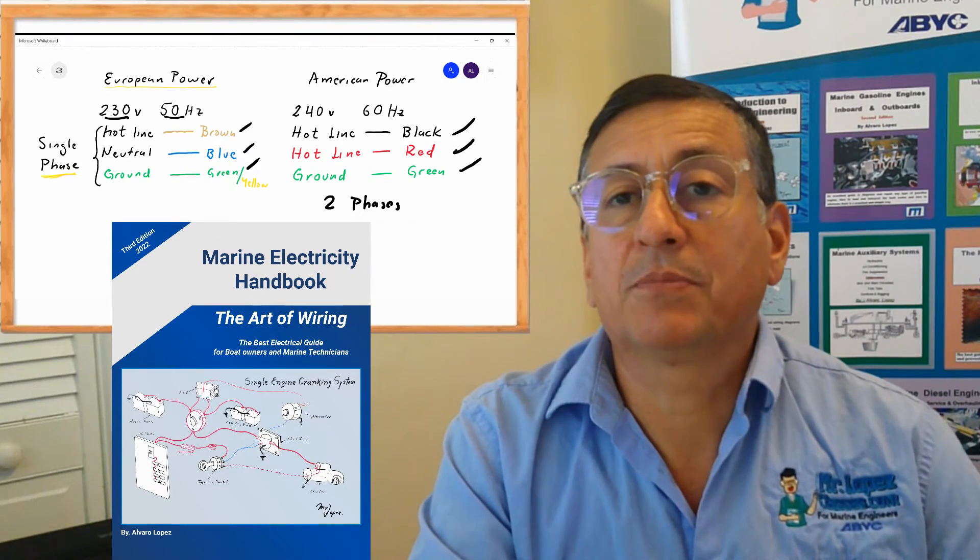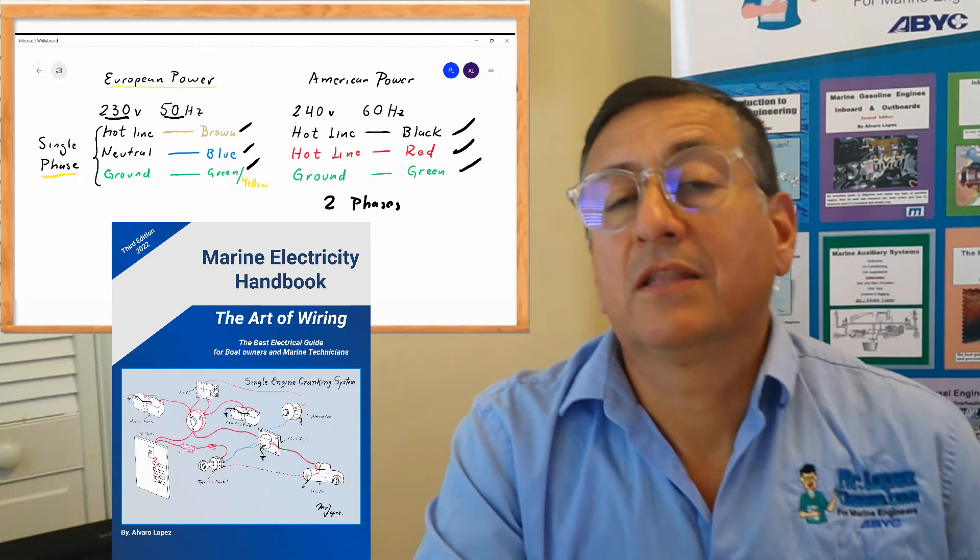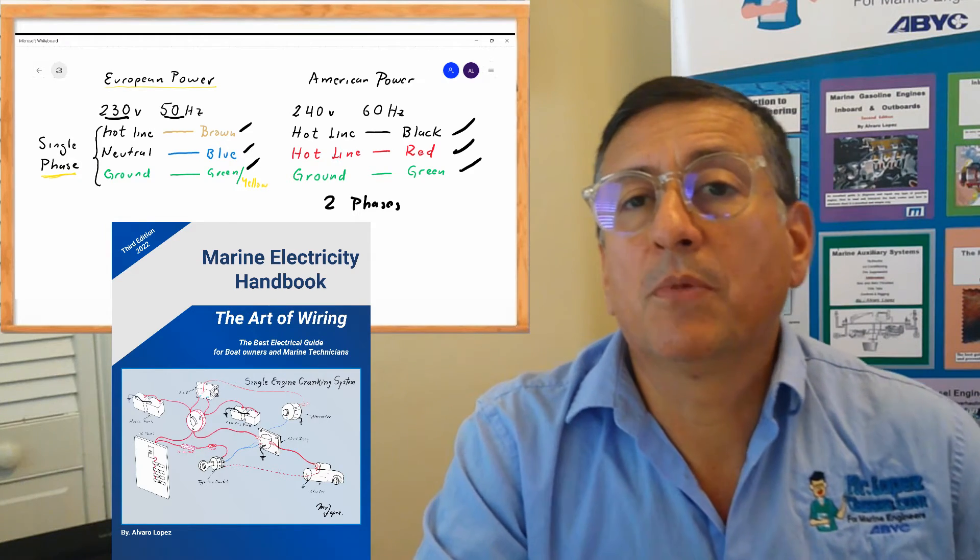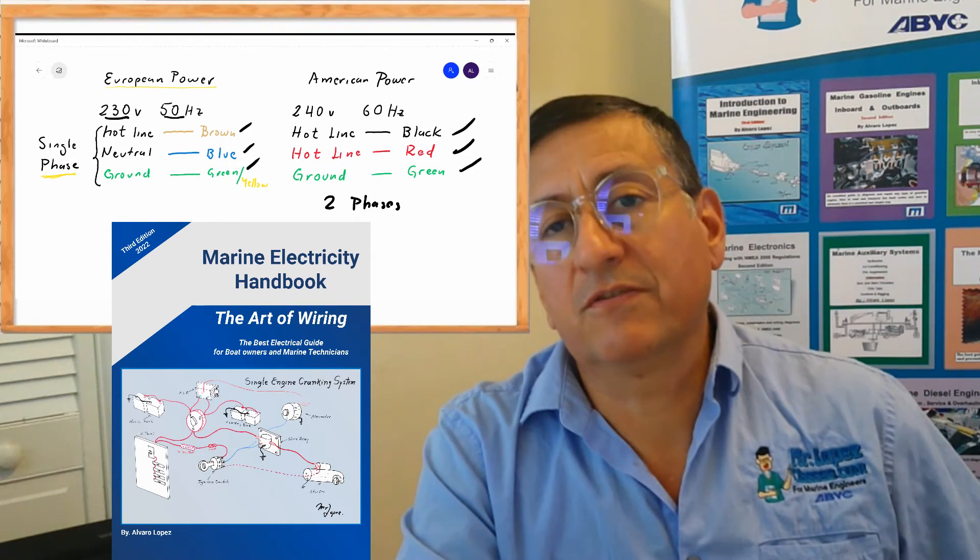in chapters 10, 11, and 12, the procedure to convert a boat from American to European or vice versa.